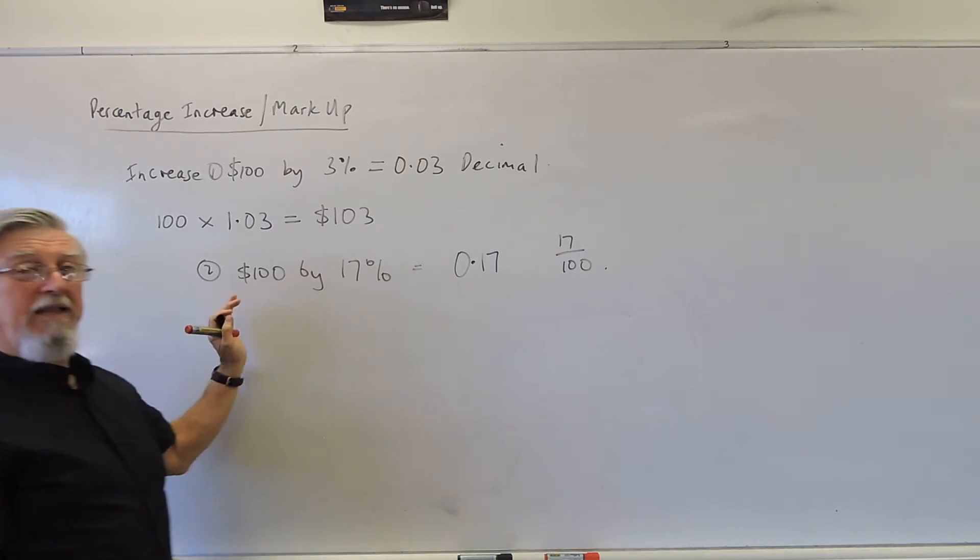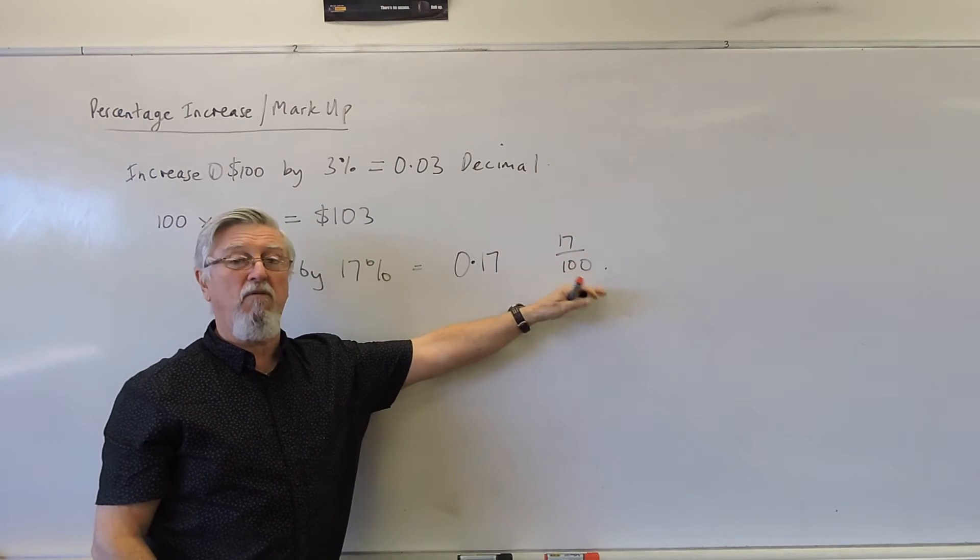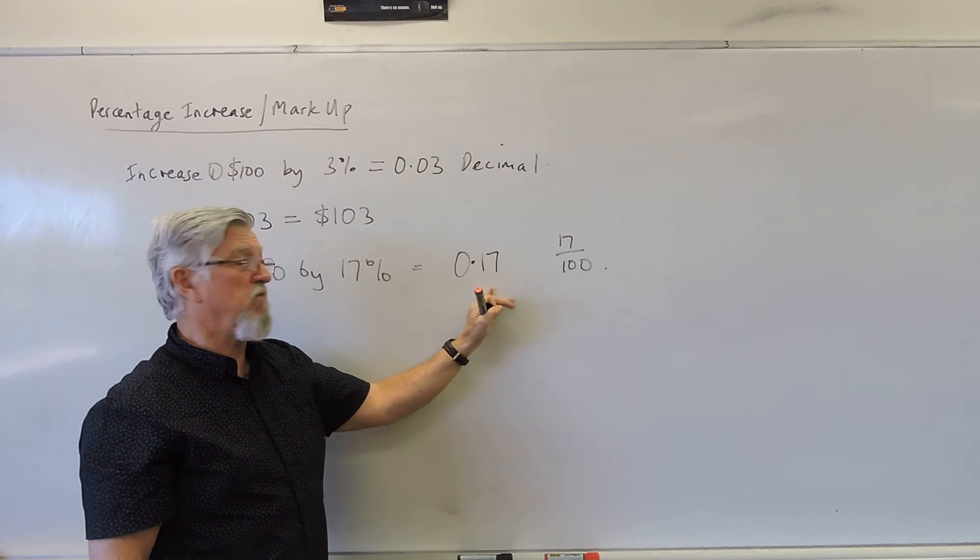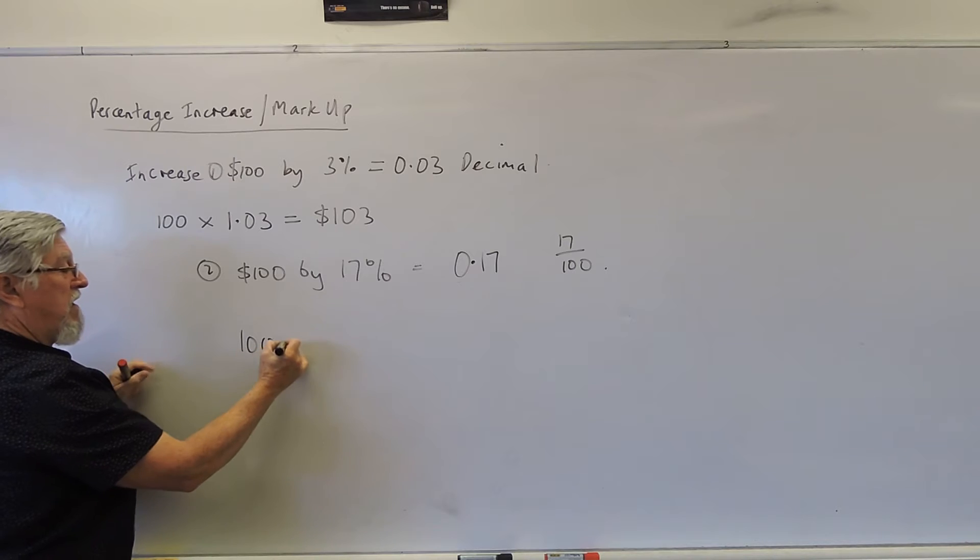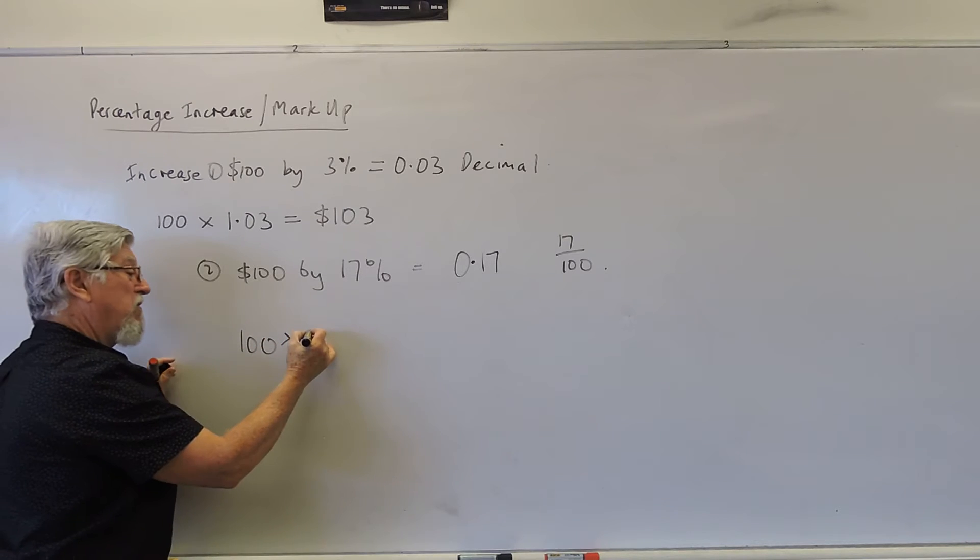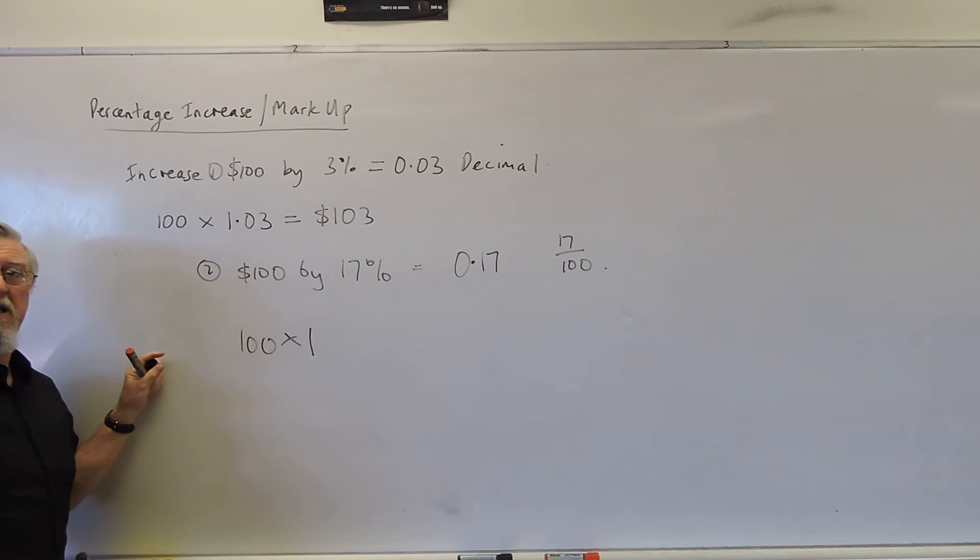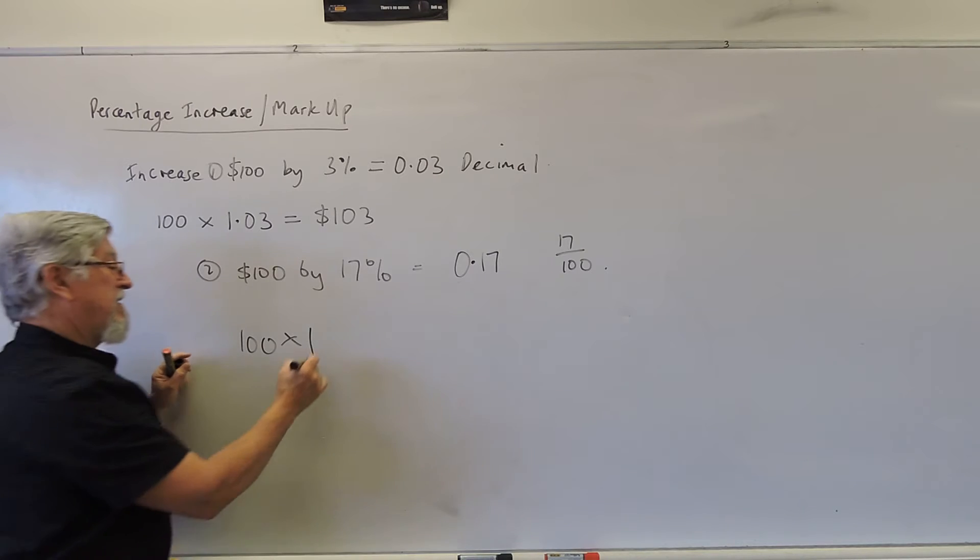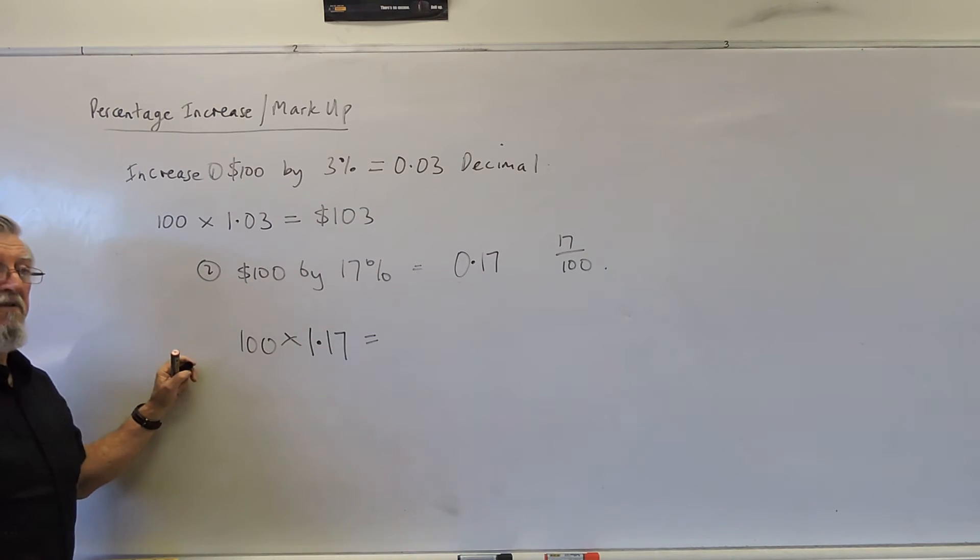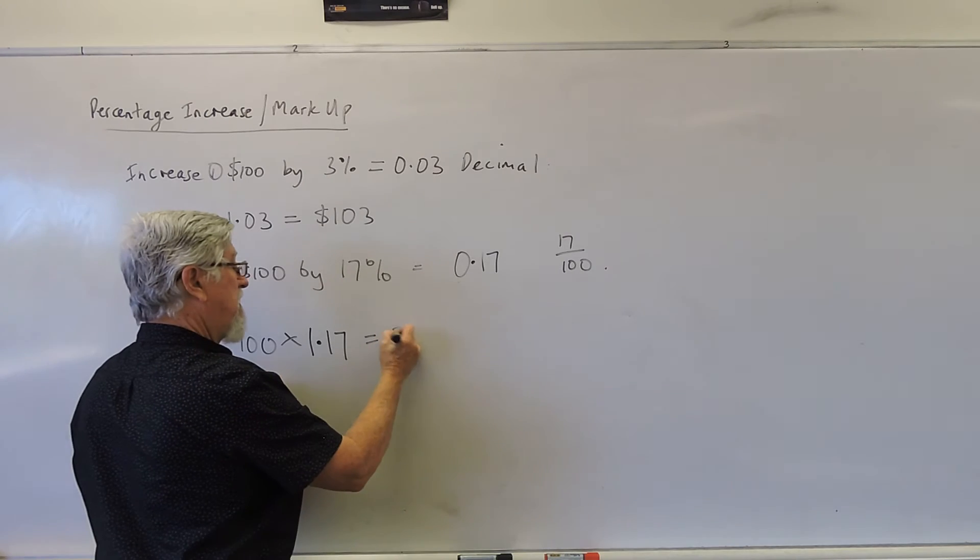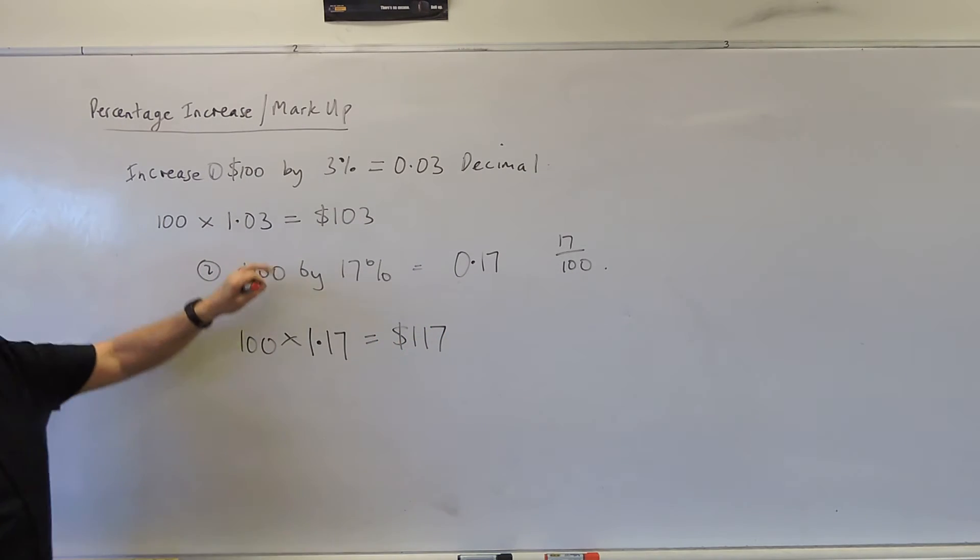Just remember if we're talking about money, the fractions are not that helpful because we're wanting the decimals for the money. So if I increase the 100 by 17%, I go 100 times by. If I multiply by 1, I get the same as what I got before. So I've got to get the extra 17% and I times it by 1.17. Put in your calculator and you get 117.